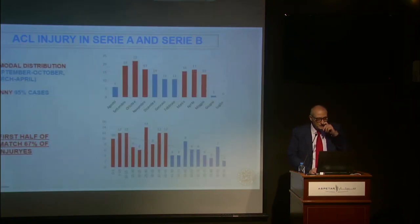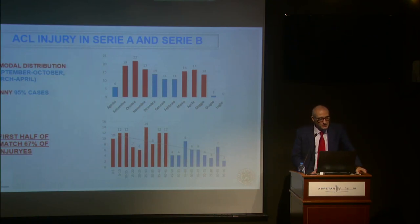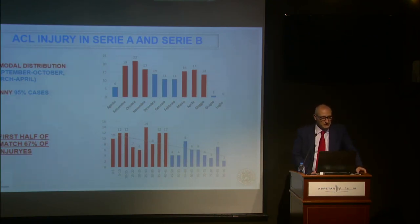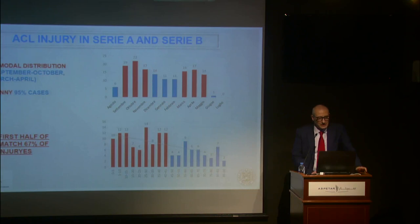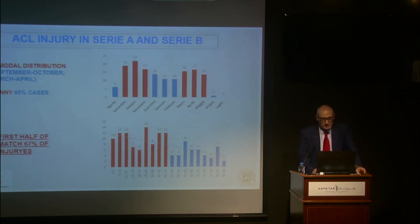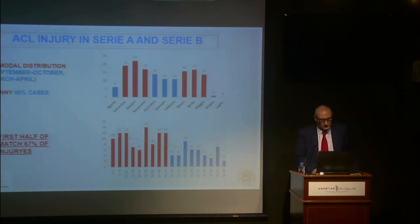In Serie A and B there is a bimodal distribution: the first peak in September-October and the second in March-April. Usually, in 90% of cases it occurs in sun — not in rain. Normally it is in the first half of the match; 77% of injuries happen in the first half.